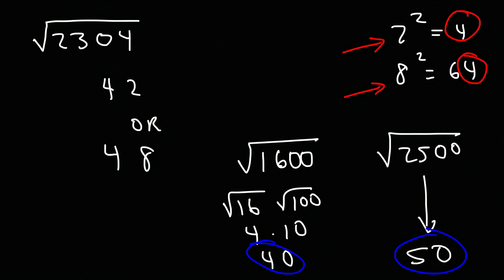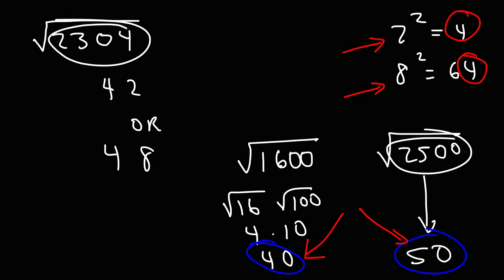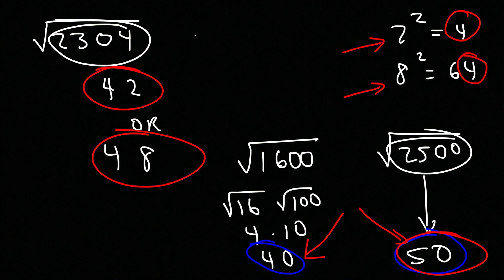Let's think about this. Is 2304 closer to 1600 or closer to 2500? It's closer to 2500. So the answer should be closer to 50. Between 42 and 48, the one closer to 50 is 48. The square root of 2304 is indeed 48. You can confirm this with a calculator.